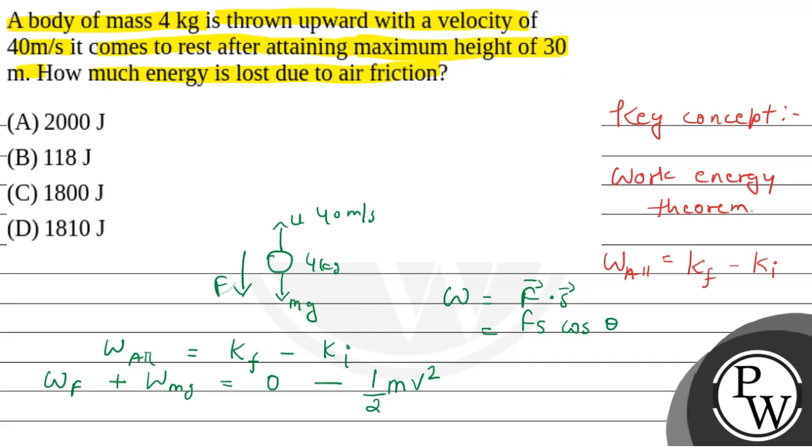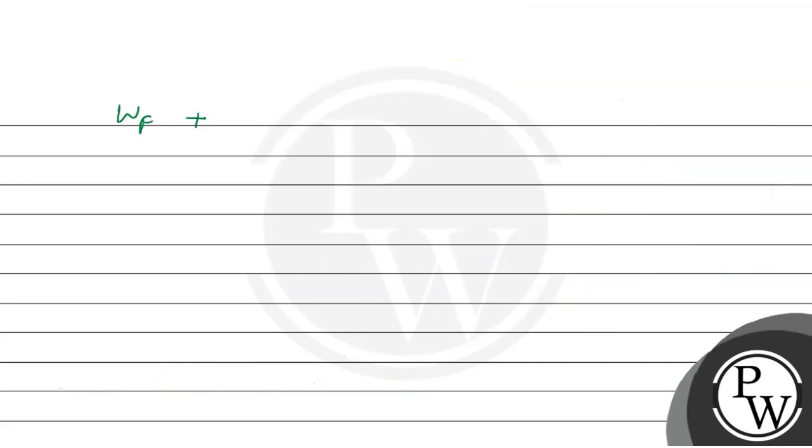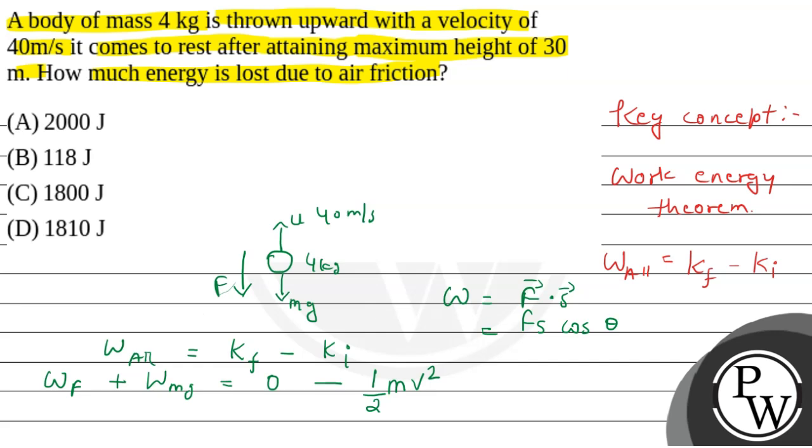We can write the air friction work done plus mg, which is negative mg multiplied by displacement, which is 30 meter. We have a negative value because cos theta, where theta is 180 degrees, and cos 180 is negative 1. That's why we have negative value.